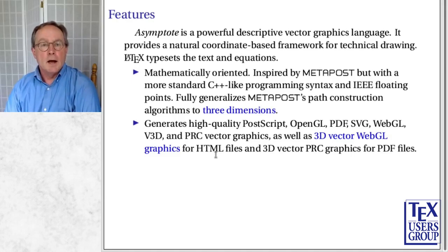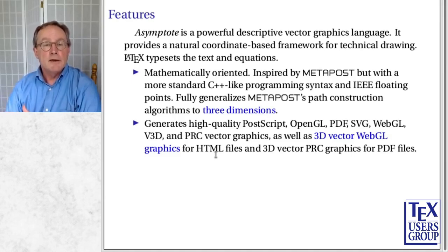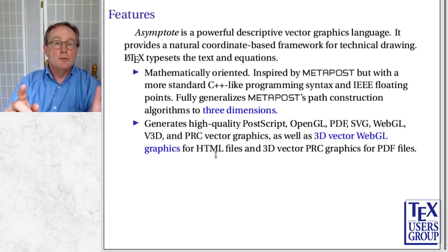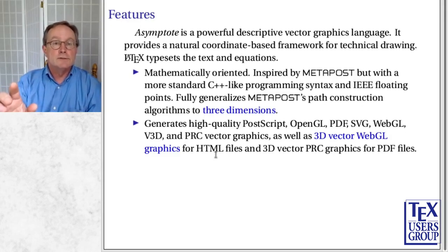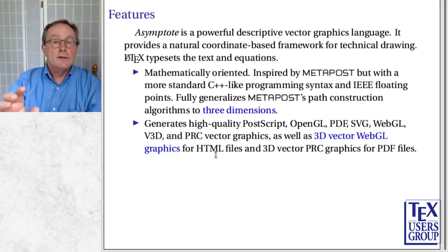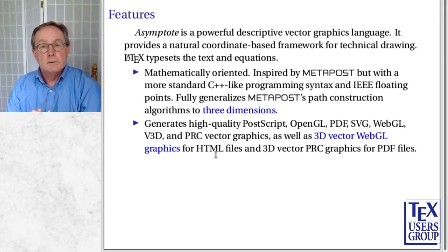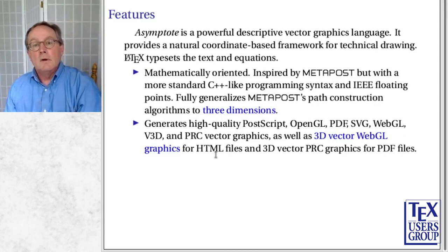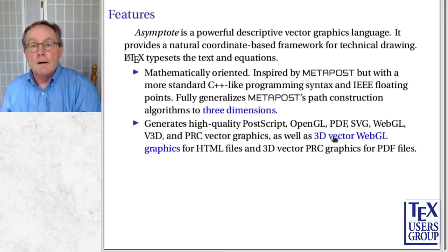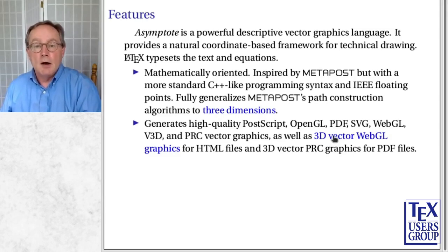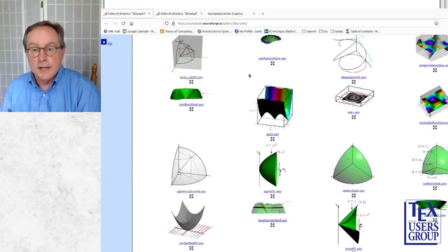If you're making a PDF output file and you want one of these things where you're drawing a 3D graphic, and you reach out with your mouse, click on it, and you can turn it and look at it from different angles — pick it up and look underneath — that's PRC. Asymptote also does 3D vector WebGL graphics, which I wanted to show as well.